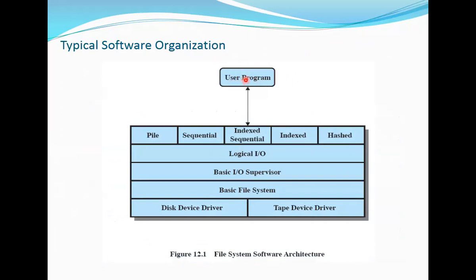The file system software architecture starts at the top with the user program — what the user interacts with. Then there are different file organizations: sequential, indexed, and hashed files. These are structural organizations of files that the user does not see — they are handled by the file system. There is then the logical input/output layer, which makes reference to addresses, then the basic input/output supervisor, and then the basic file system. These convert logical input/output to physical input/output, where they actually retrieve the file from disk or tape.